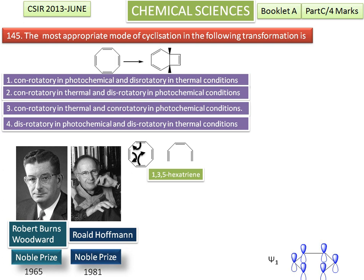The molecular orbital with the lowest energy, Ψ1, has no nodes — we can see similar phase in top lobes and opposite phase in bottom lobes. The next higher one is Ψ2, which has 1 node. The next higher one is Ψ3, which has 2 nodes.